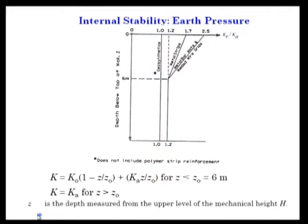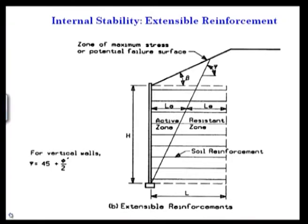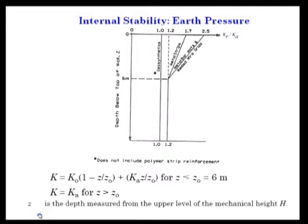Up to this point we have finished external stability and some part of internal stability for extensible reinforcement. Now for internal stability of earth pressure — which does not include polymer strip reinforcement — looking at the figure, the total height of the wall and depth below the top of wall z are considered. For geosynthetic, Ka comes to about 1.7, varying from 0 to 6 meters in depth; for metal bar and welded wire grids it comes up to 2.5.